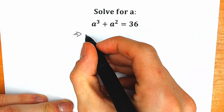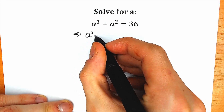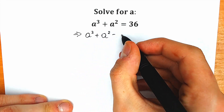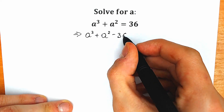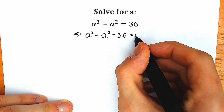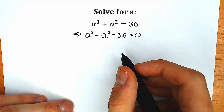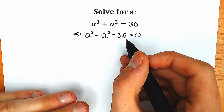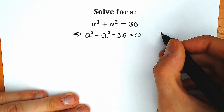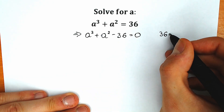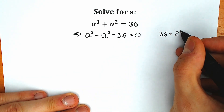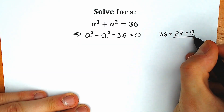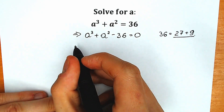So we have a cube plus a square minus 36 equal to 0. This is our first step. Right now, instead of this 36, I prefer to write 27 plus 9. It changes nothing, but in the same way it helps us a lot.